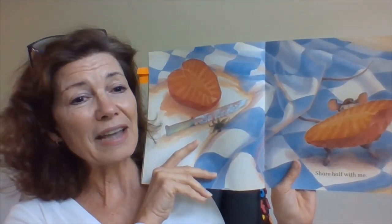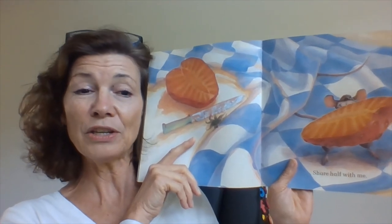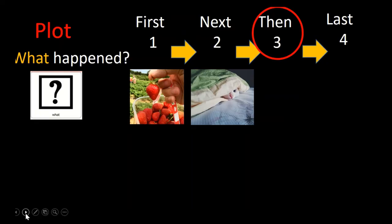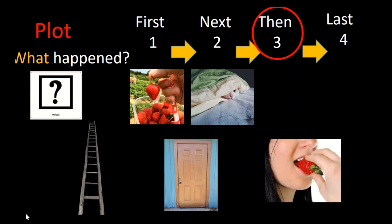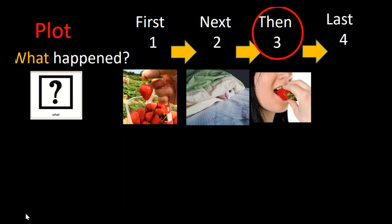Then that little mouse decided the only way he could keep it from that bear was to cut it in half and give part of it to you and eat the other part himself. Then what happened? Did he climb up a ladder? Did he close his door after going inside to hide? Or did he eat the strawberry? Did you say that he ate that strawberry up? Good thinking.